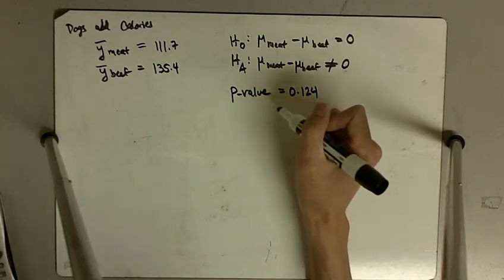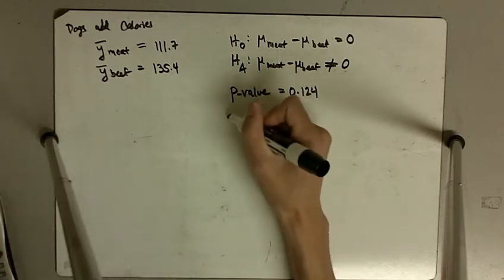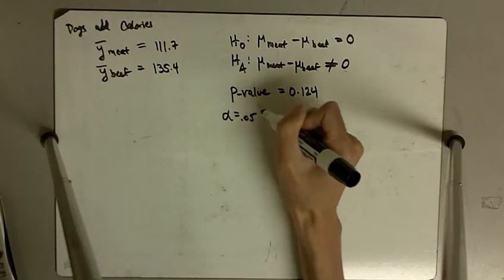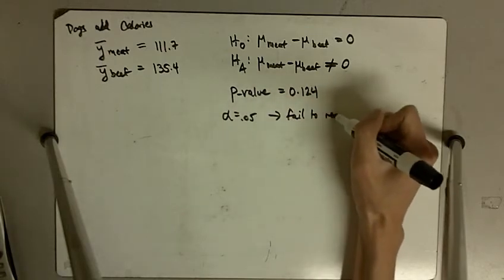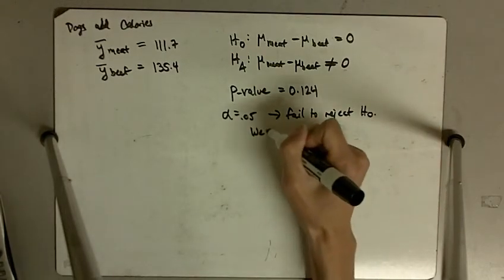This means that at alpha equal 5% or alpha equal 10%, we fail to reject. So if we choose alpha equal to 5%, this means we fail to reject the null, which means we do not have evidence of a difference.